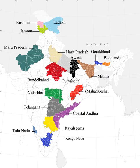At least four states have been proposed to be carved out of Uttar Pradesh. The population of the proposed Awad state, consisting of Awadi-speaking districts of central Uttar Pradesh, would be approximately 50 million people, with an area of approximately 75,000 square kilometres and Lucknow as the capital.